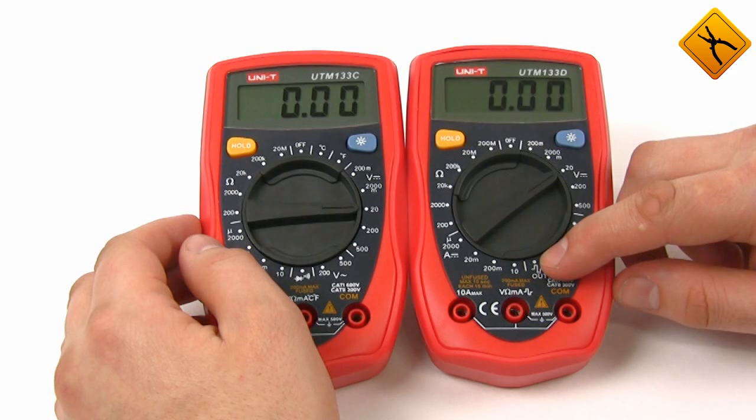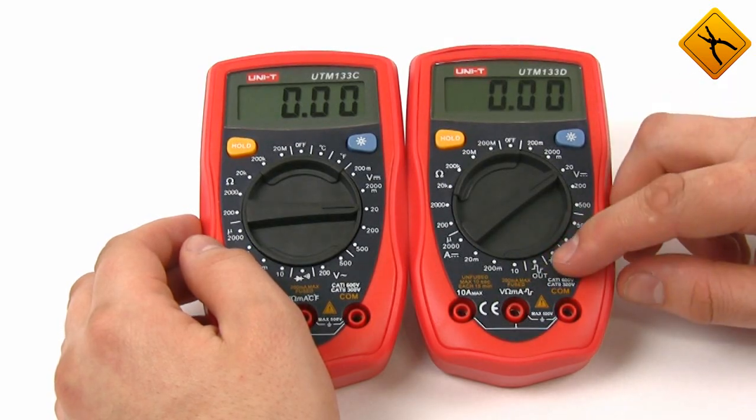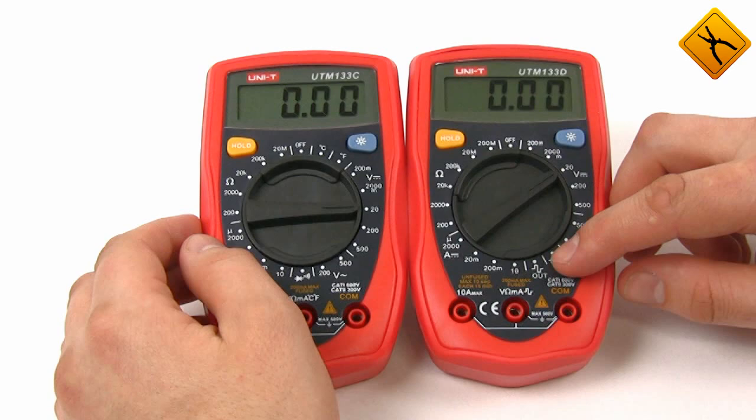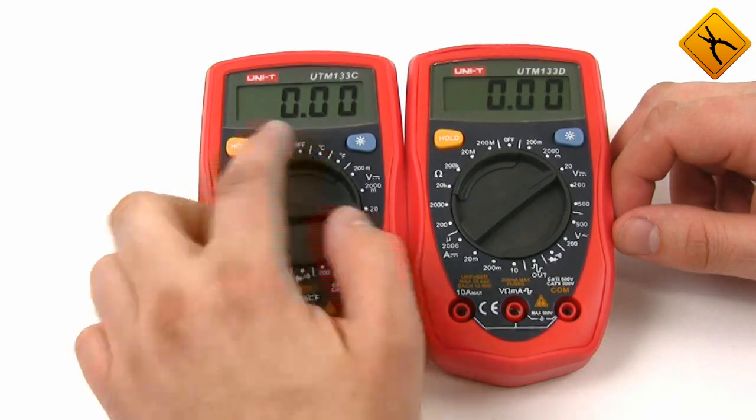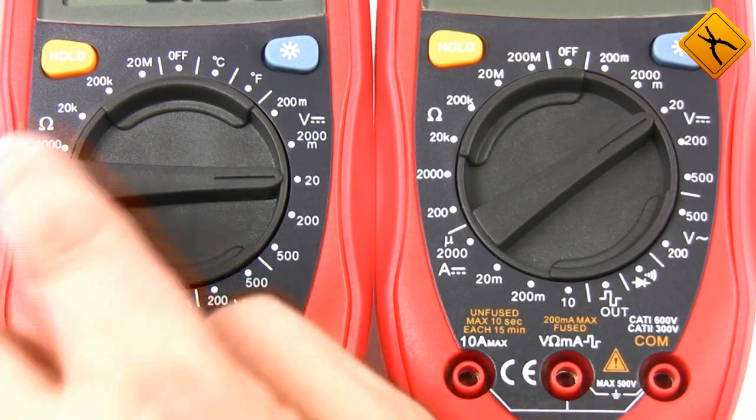Besides, the UT33D has a built-in square wave generator with a frequency of 50 Hz and the amplitude of 2 volt. Peak-to-peak voltage, 4 volt. UT33C has an advantage of temperature measurement function.